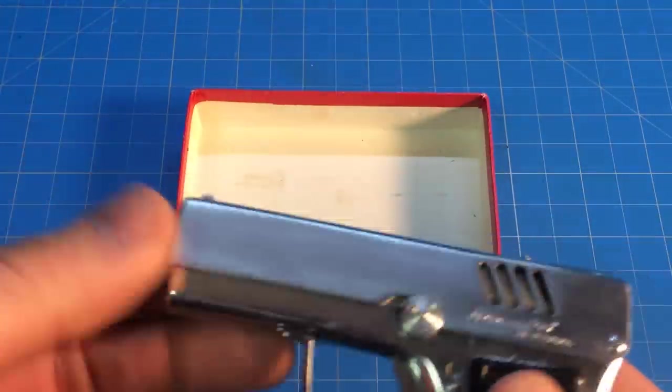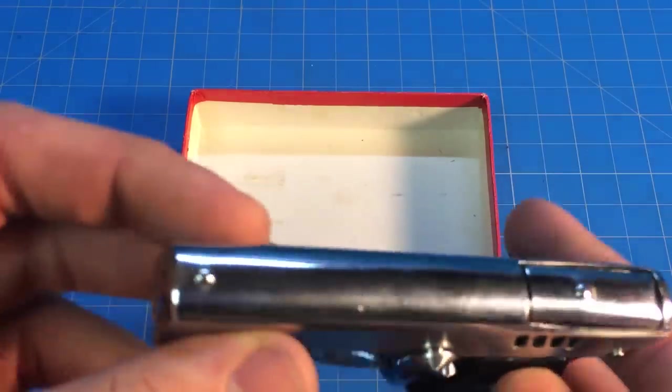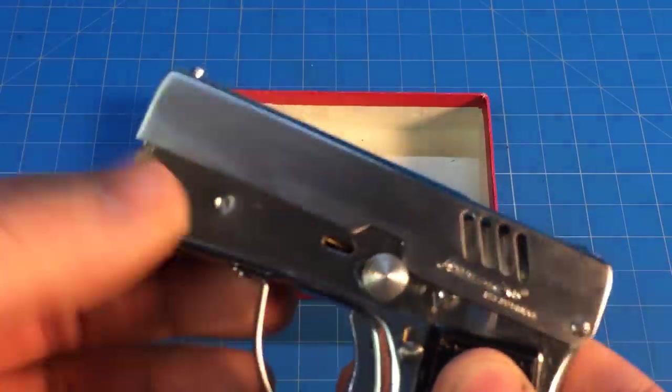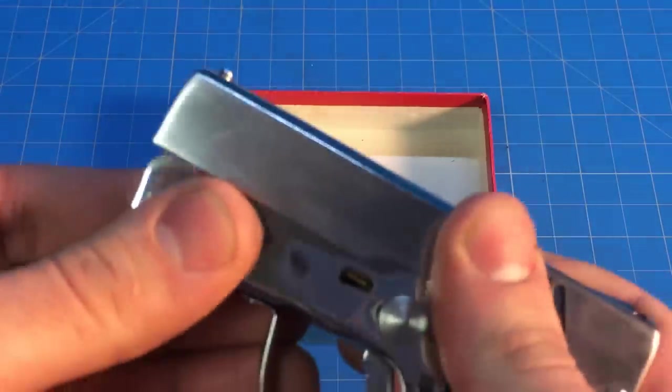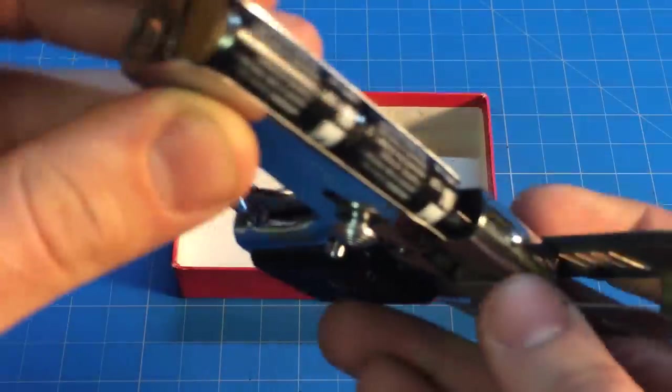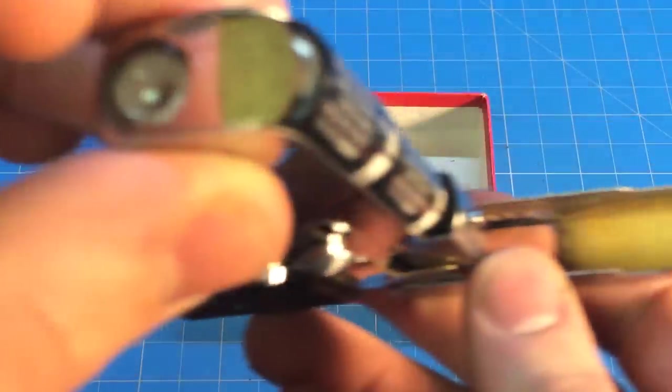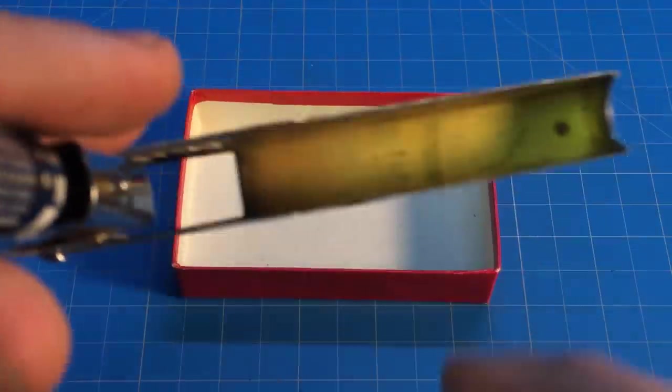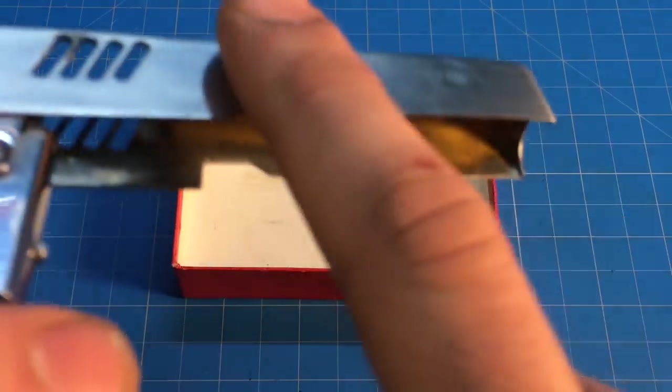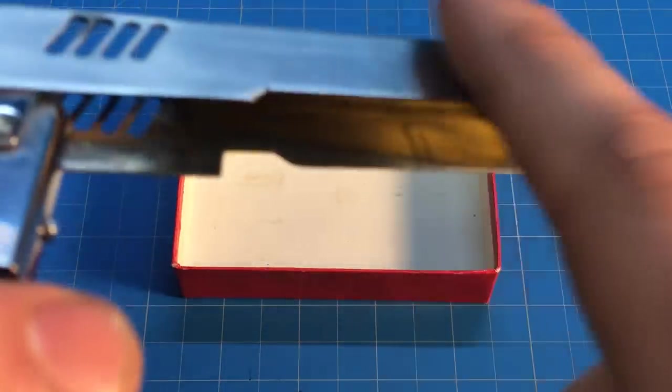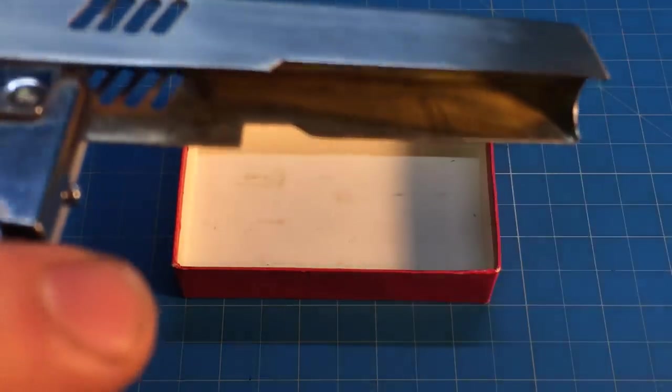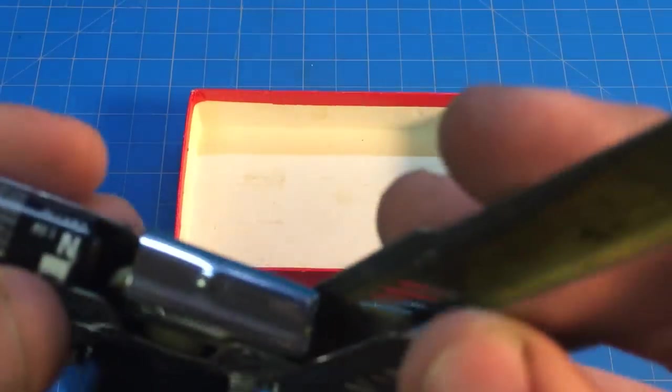The only thing with a little bit of deterioration is the inside. You can see it's a copper base with a chrome or stainless steel plate, so there's a little bit of tarnishing inside.